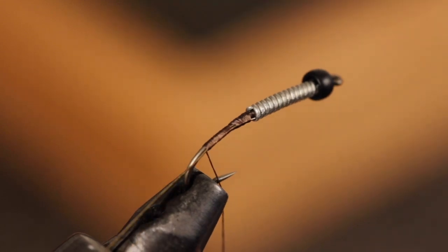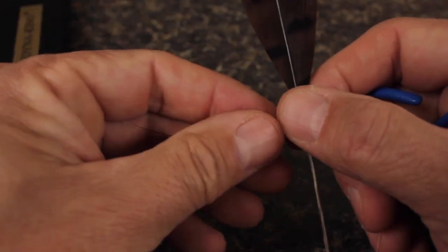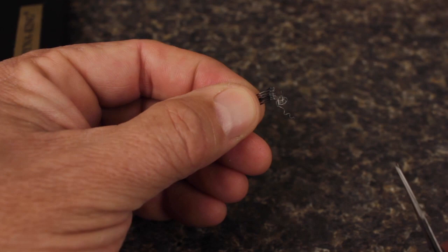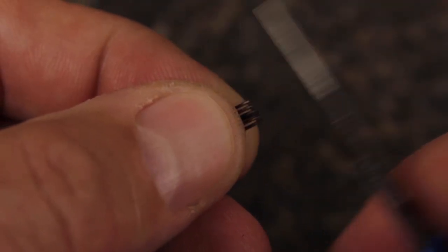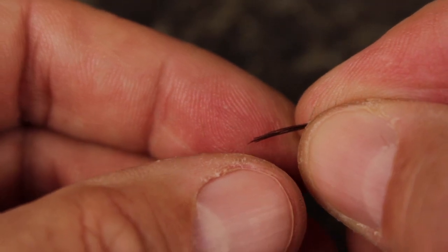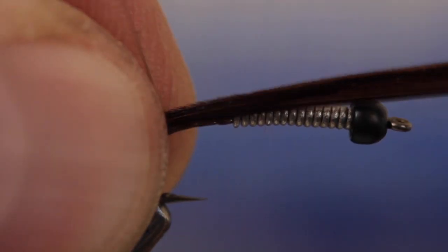Select a dark brown pheasant tail feather with long fibers and pull down 5 or so perpendicular to the stem and then strip them off. This should keep the tips aligned. Snip the curly butt ends off square. Check to make sure the tips are still properly aligned. Measure to form a tail a little more than a hook gap in length and with a pinch wrap secure the fibers to the top of the hook shank.